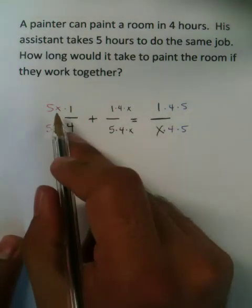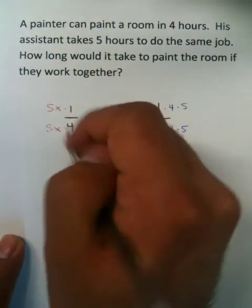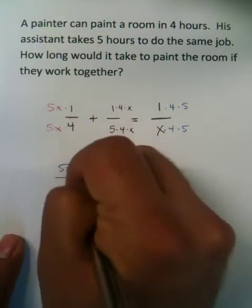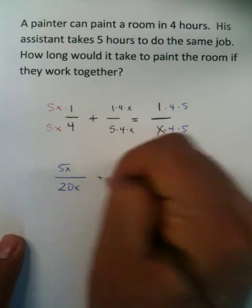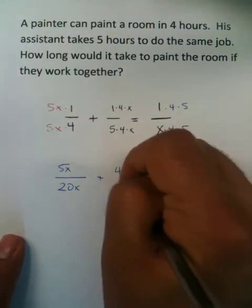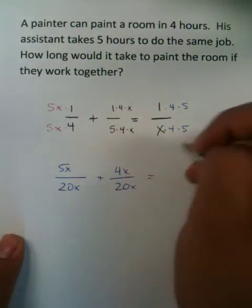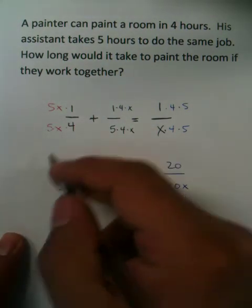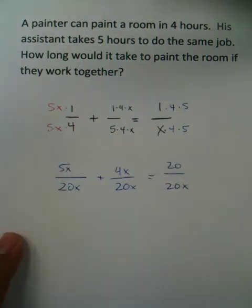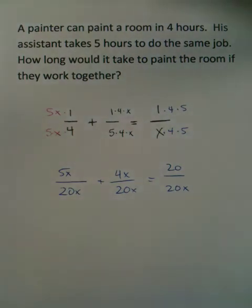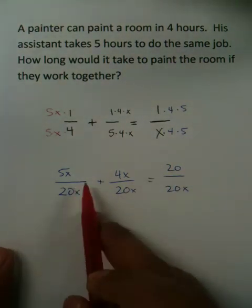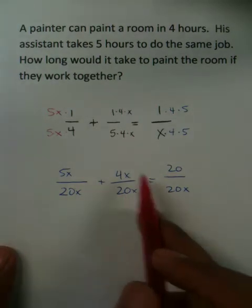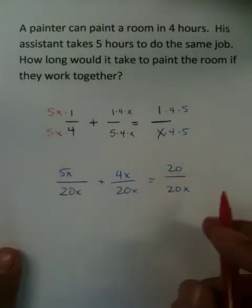Now, multiply only the denominators, actually the denominators too in this problem, 5x all over 20x plus 4x all over 20x equals 20 all over 20x. Now, don't reduce any of the fractions. The whole point of doing this was basically for you to say, because of the property of equality, since all denominators are the same, that means all numerators will make this representation.